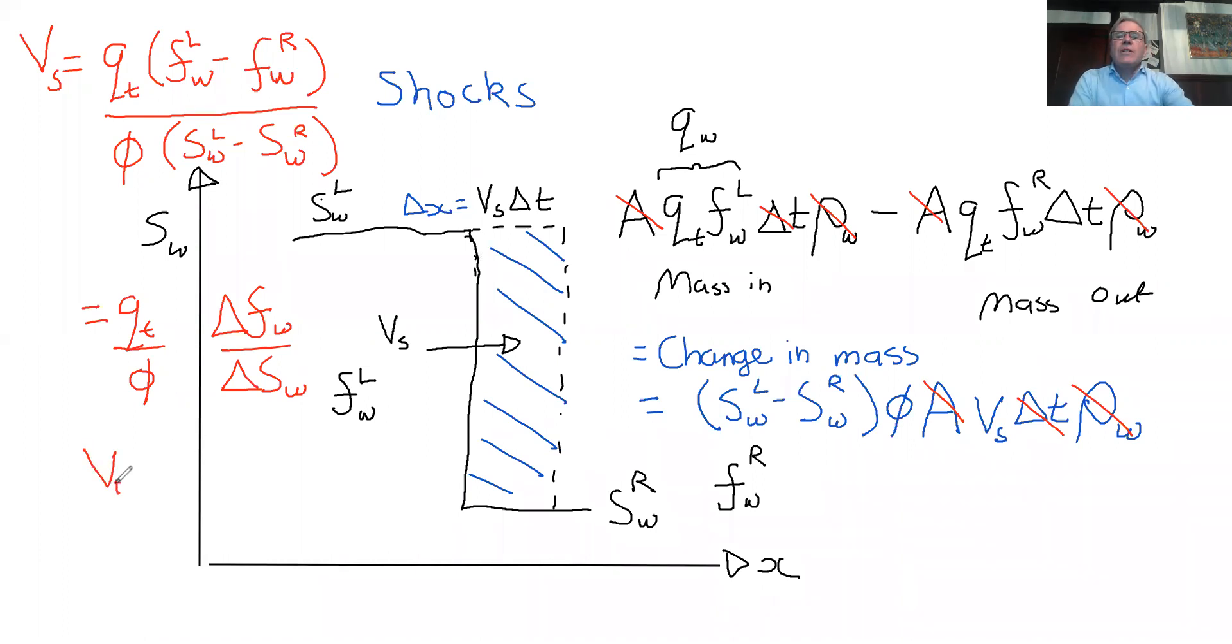So it's the change in fractional flow across the shock divided by the change in saturation. And the dimensionless shock speed, because I've said before real speed is Q_t over φ times the dimensionless speed, the dimensionless speed is just ΔF_W over ΔS_W.